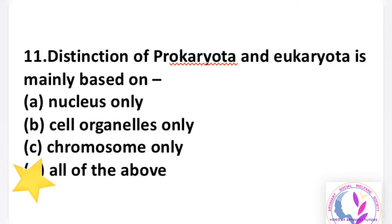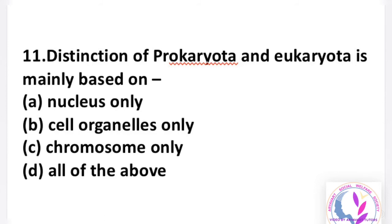The difference between prokaryotes and eukaryotes: we know they differ in chromosome, DNA, nucleus, and cell organelles. These features — nucleus, chromosomes, and cell organelles — are available in eukaryotes but absent in prokaryotes. So the answer is D, all of the above: nucleus, chromosomes, and cell organelles are present only in eukaryotes but absent in prokaryotes.